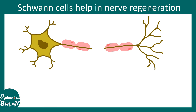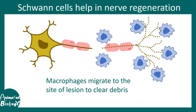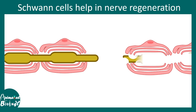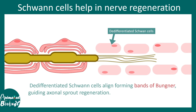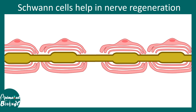When a peripheral neuron is injured, Wallerian degeneration occurs and macrophages migrate to clear debris. The intact portion of the axon produces axon sprouts, and Schwann cells de-differentiate and align themselves to form the bands of Büngner — a passageway that guides axonal sprouts and accelerates the process of nerve regeneration in the peripheral nervous system.